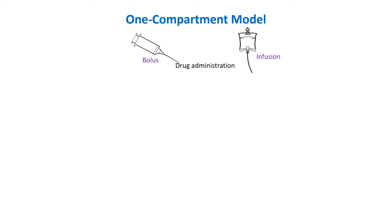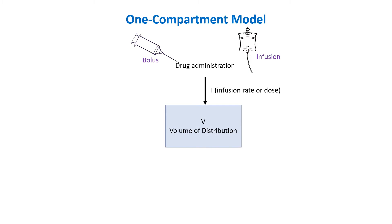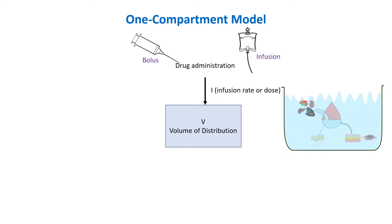In the one compartment model, the administered drug distributes instantly and uniformly throughout the body after administration. The body is treated as a single homogeneous compartment, meaning that the drug concentration is the same throughout all the tissues and fluids at any given time.